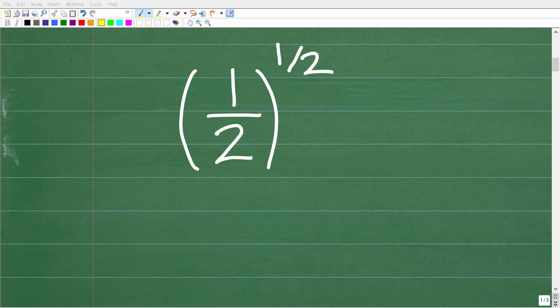The first step is to recognize that anything to the one half power means finding the square root of this thing. So instead of one half to the one half power, this expression is equivalent to the square root of one half. This is a really critical concept.